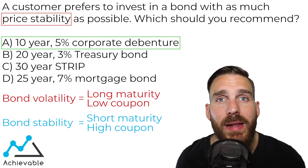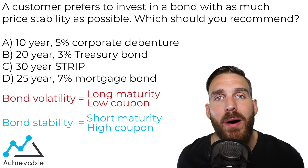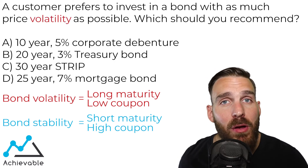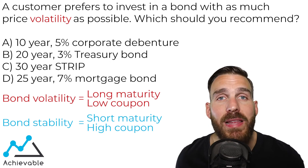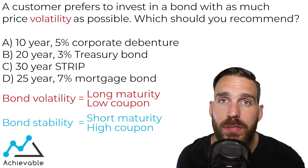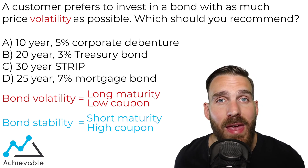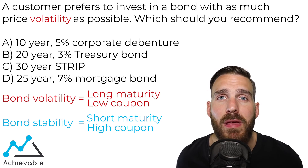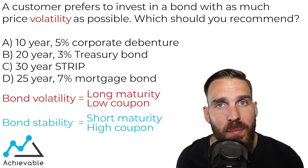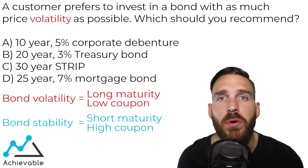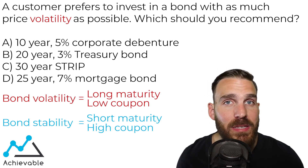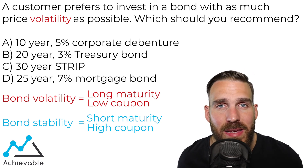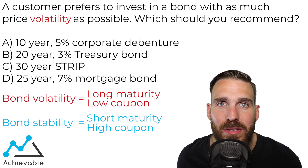Before we go, let's flip it on its head — what if they asked what bond has the most price volatility? We go back to what we know: the bond with the longest maturity and the lowest coupon. The longest-term bond here is the 30-year strip. A strip is a U.S. government zero-coupon bond, meaning it pays no interest over the life of the bond.